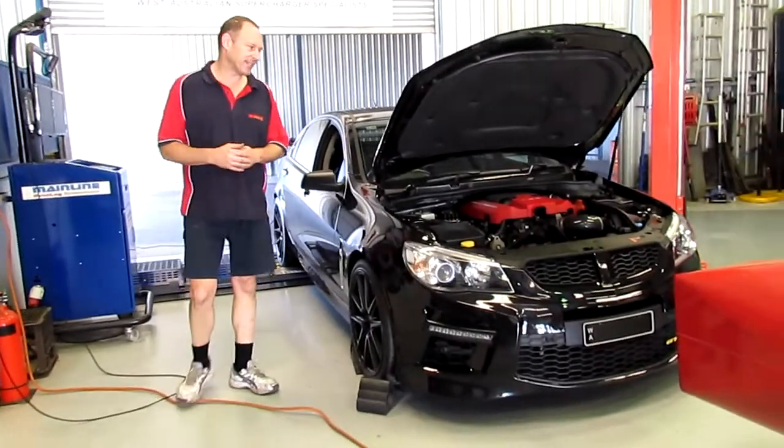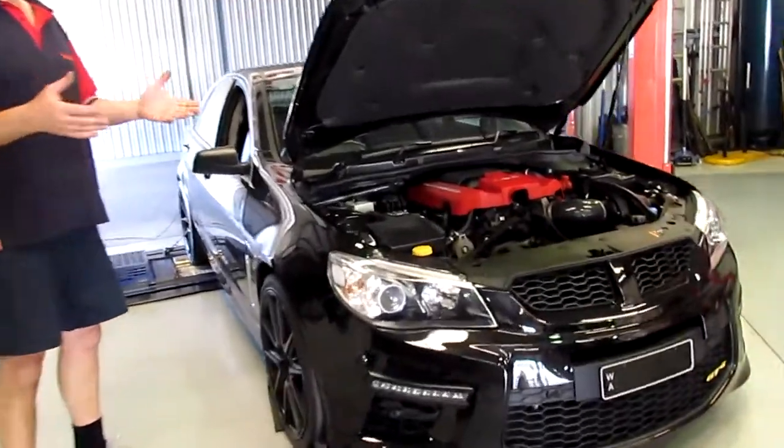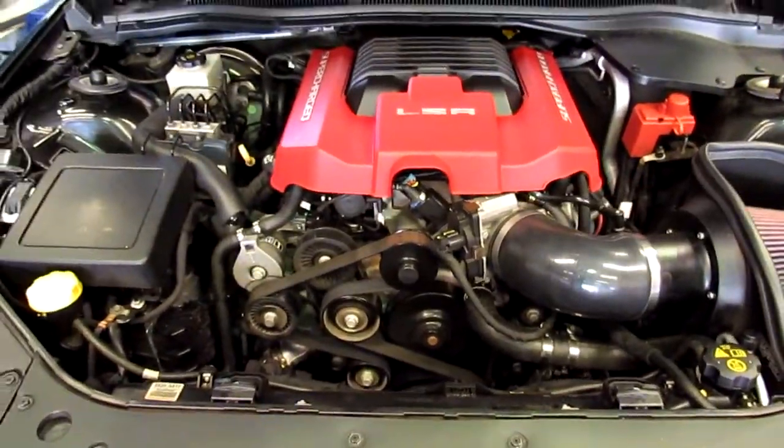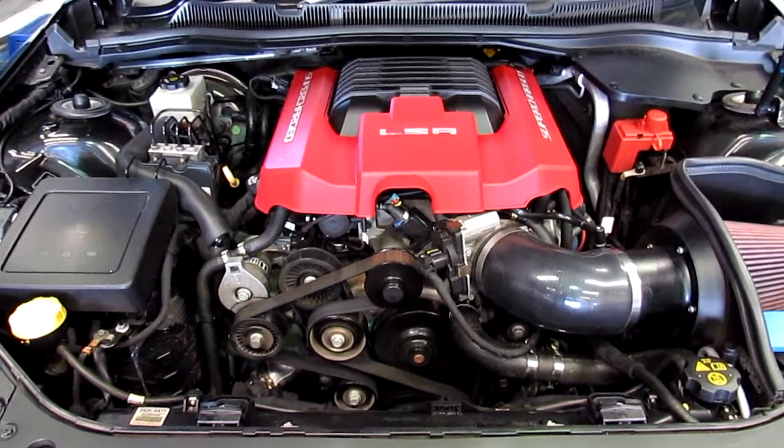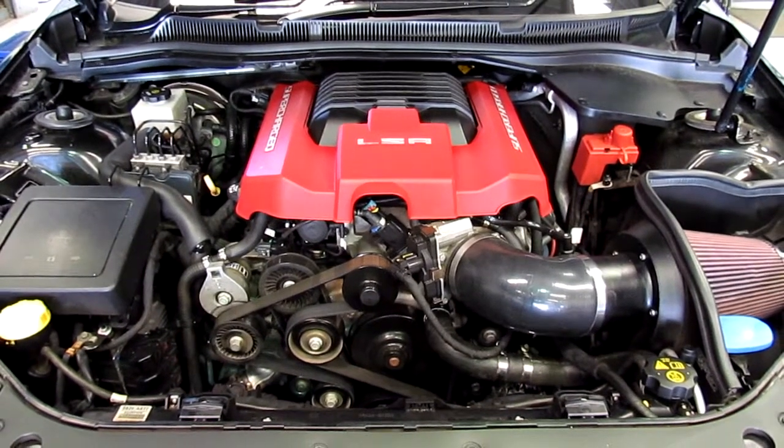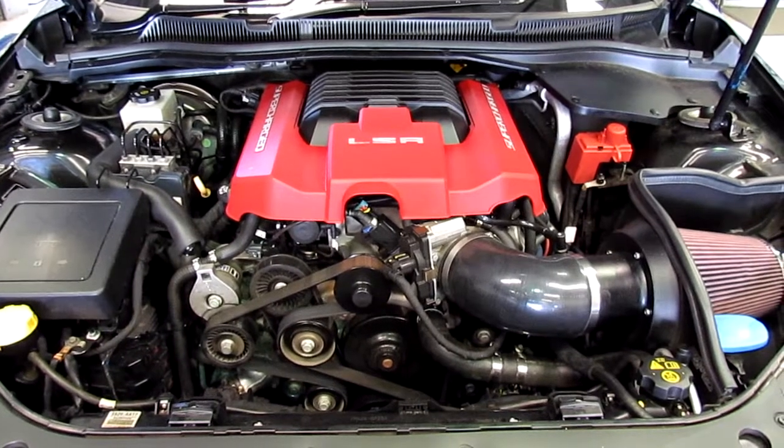This series one LSA GTS came in to us with basic mods done already, so it had a full exhaust system, 7 and 8 inch headers, twin 3 inch exhaust system. It's got an 18% overdrive pulley, it had a full air cleaner on it and it was tuned.